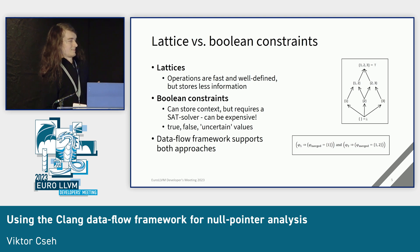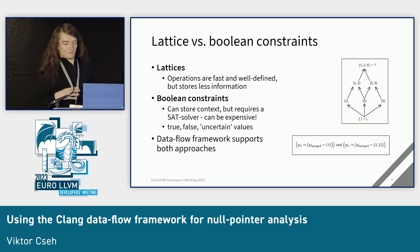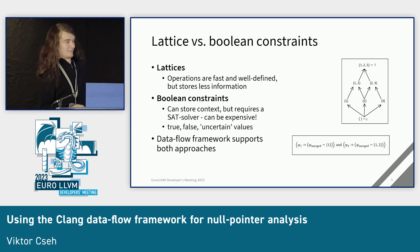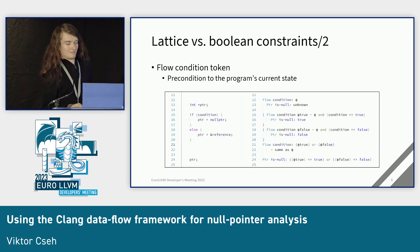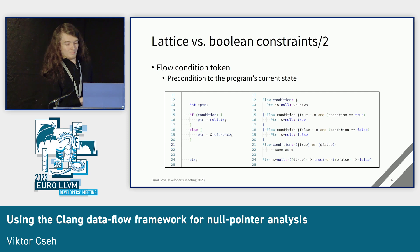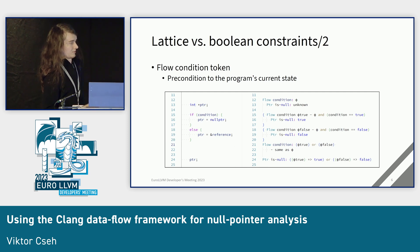The other way is storing boolean expressions that we can attach to variables, and we can evaluate these conditions on any given program state to see if they satisfy or not. We have a magical third value — where the given expression can be neither true nor false — and we call this an uncertain value. Using boolean constraints, we can check the nullness of a pointer: the pointer is null when the condition is true, and not null when the condition is false.